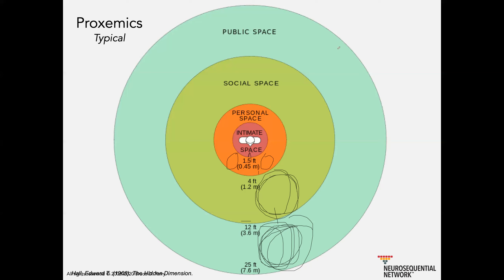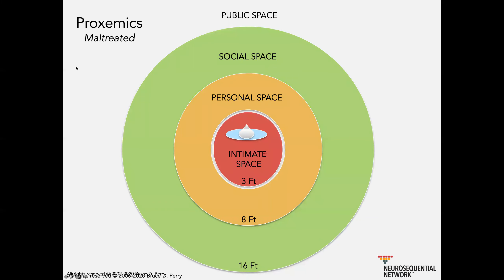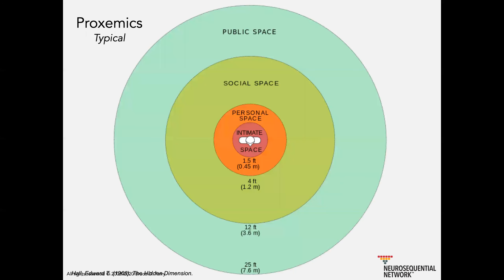Now think about these distances — this is for a typical person. There are all kinds of things that influence these spaces, including culture. If you're from different cultures, you'll have a history of what's considered acceptable distance for social space, personal space, and intimate space — and this is very culture-bound. Not only is it culture-bound by country, but it's bound by personal experience. If you take somebody who has a history of maltreatment, their sense of intimate space is very much bigger than somebody who hasn't had that experience.